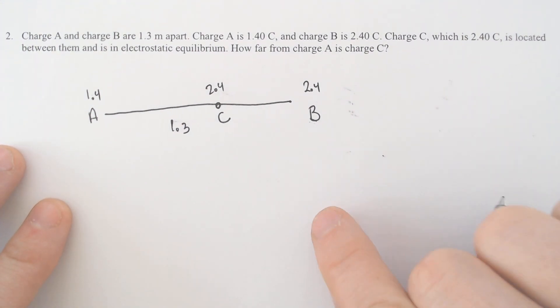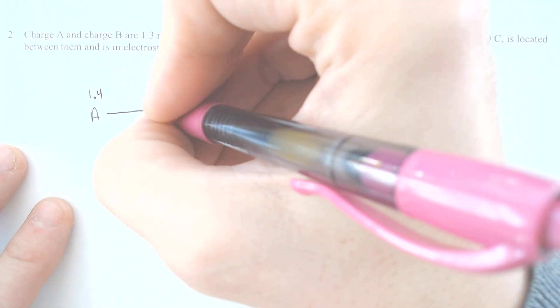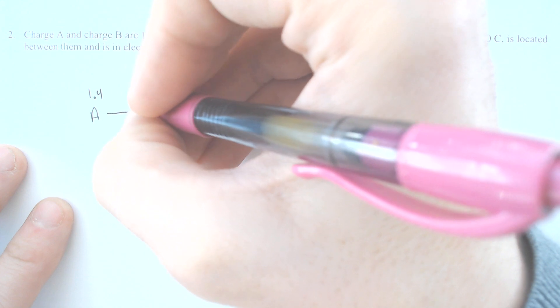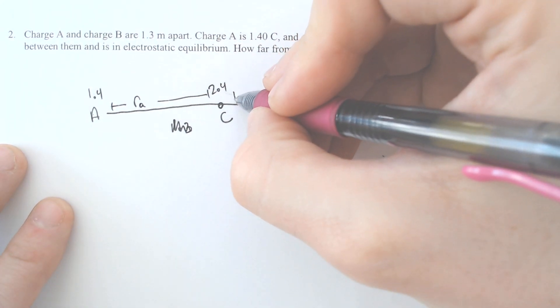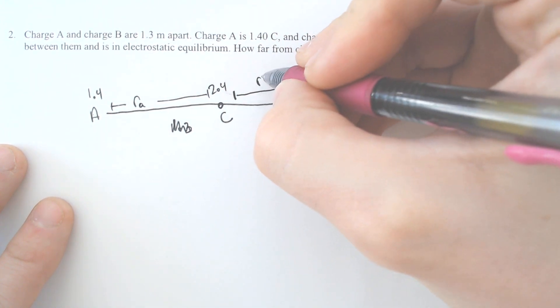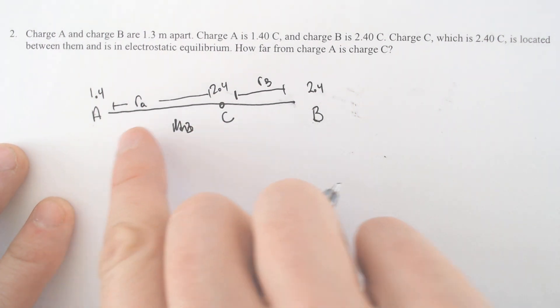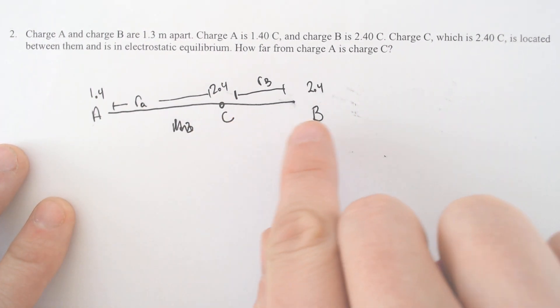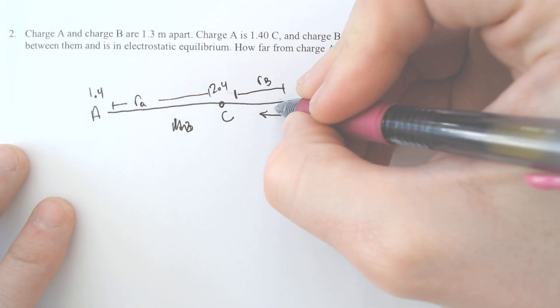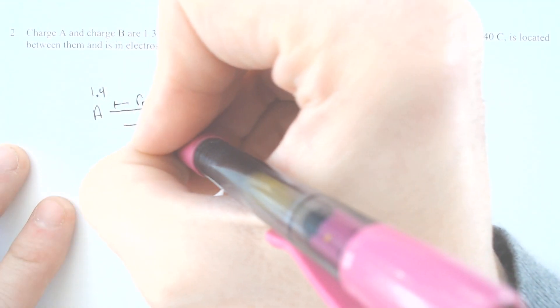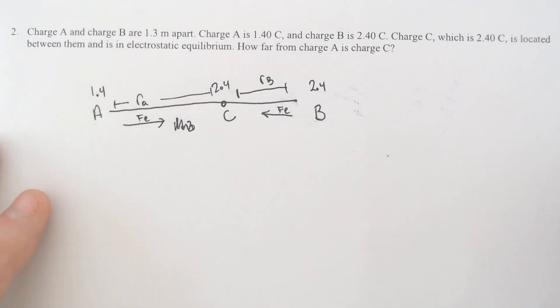Now in order for them to be in equilibrium I'm going to call this distance right here the radius between A and C the radius of A. And I'm going to call this distance from C to B the radius of B. We know that the force that these two are feeling between A and C and between C and B have to be equal. So first off C is being repelled away from B and repelled away from A and we want that to be in equilibrium.